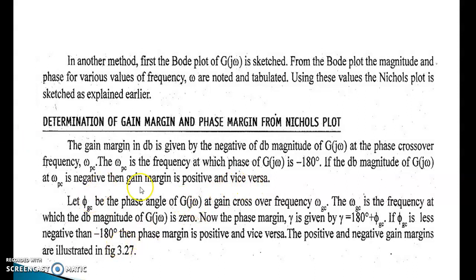Let φ_Gc be the phase angle of G(jω) at the gain crossover frequency ω_Gc. ω_Gc is the frequency at which the decibel magnitude of G(jω) is zero. The phase margin γ is given by γ = 180° + φ_Gc. If φ_Gc is less negative than minus 180 degrees, then the phase margin is positive, and vice versa.